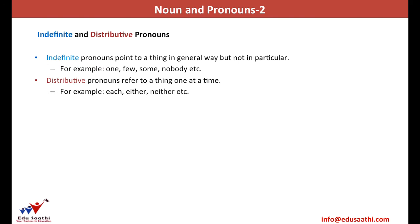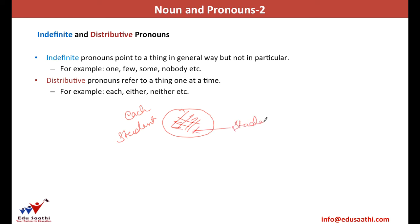Lastly, we have indefinite and distributive pronouns. Indefinite pronouns point to something in general — for example, 'One must be aware of one's deeds,' where 'one' is true for any person. Distributive pronouns are used when there is a collection of people and you are referring to one at a time. For example, 'Each student is a defaulter' — you pick any one among them and he or she would be a defaulter. So 'each,' 'either,' 'neither' are distributive pronouns — they show a one-at-a-time case.